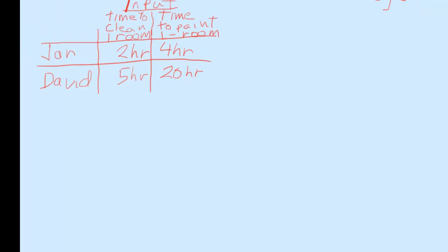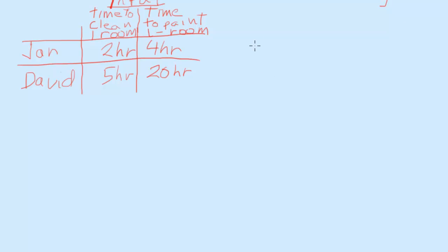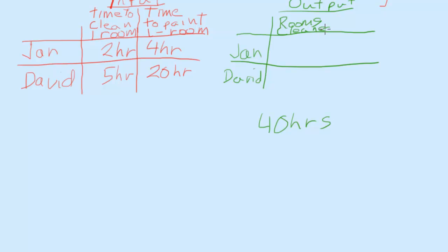One of the best ways of looking at this is looking at outputs. So let's draw it over here. One of the best ways to calculate comparative advantage. So we have Jan, we have David, and let's say we take 40 hours, and we're trying to see their output. So this is rooms cleaned and this is rooms painted in 40 hours.